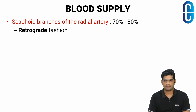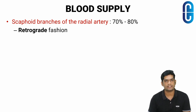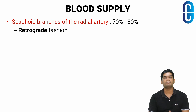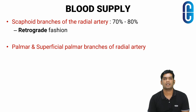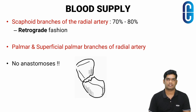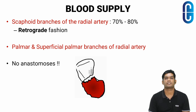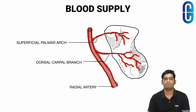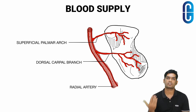The major blood supply comes from the scaphoid branches of the radial artery entering the dorsal ridge at or just distal to the waist area, supplying 70 to 80 percent of the bone including the entire proximal pole in a retrograde fashion. The second group arises from the palmar and superficial palmar branches of the radial artery, entering the distal tubercle and supplying the distal 20 to 30 percent. There are no anastomoses between the dorsal and palmar vessels, so fractures may destroy blood supply to the proximal part leading to avascular necrosis.